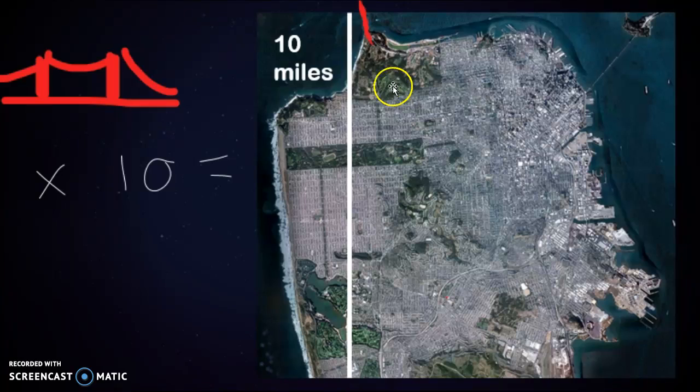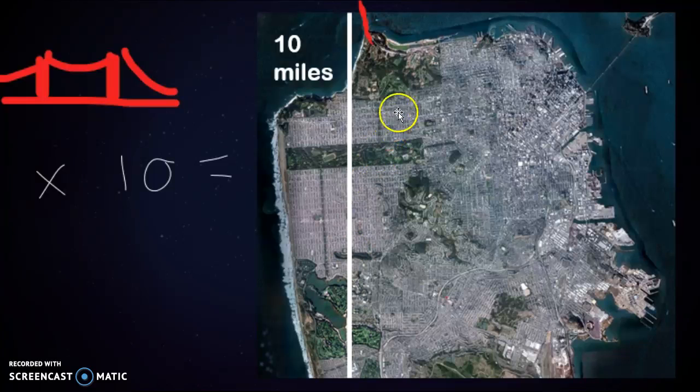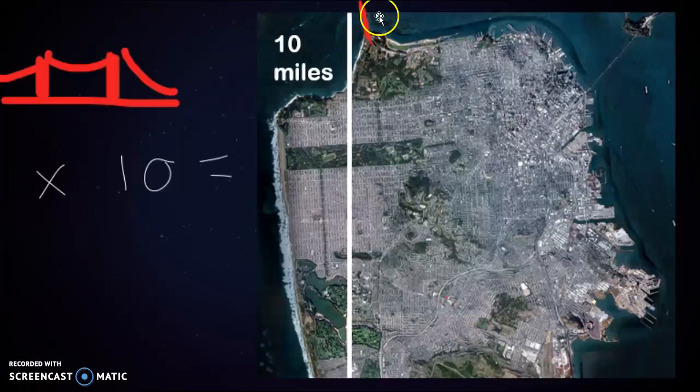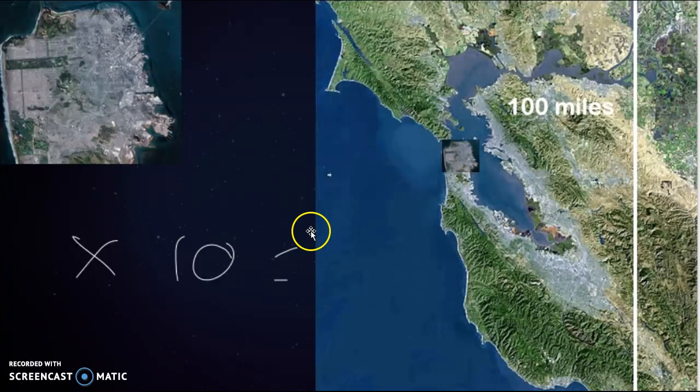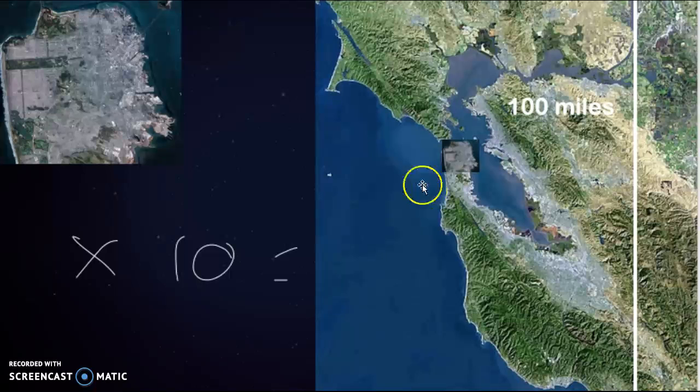But as you can see, this is the actual Golden Gate Bridge over here. And if you multiply San Francisco by 10, you get San Francisco Bay, and I actually managed to fit this picture in here and it actually fits up perfectly. And it would be about 100 miles.